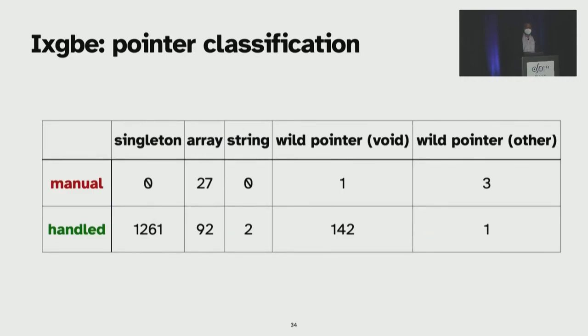From the nest check pointer classification, we handle all the singleton pointers. For sequential pointers, that is, arrays, we are able to handle 75% of the cases for iXGBE. For the rest, the analysis was either not able to find the allocation site or the size of the array. And we handle all but one of the wild pointers that are typecasted with void, and we emit warnings for wild pointers that are typecasted to multiple types that couldn't be handled.